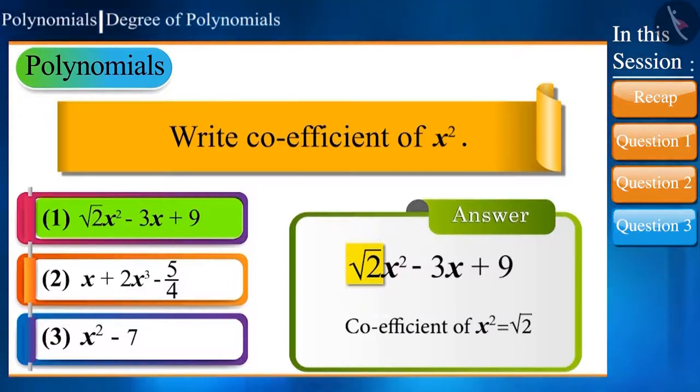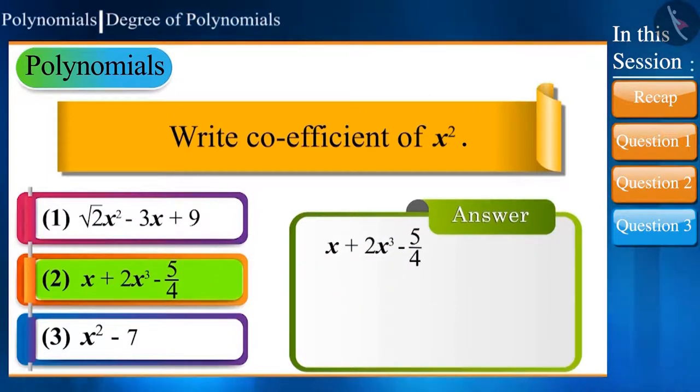Now let's see the expression x + 2x³ - 5/4. Here x² is not present in the equation. How do we find its coefficient? This expression can also be written where the coefficient of x² is 0, and hence this complete term is 0. In an expression or polynomial, if the x² term is not present, then its coefficient is 0.